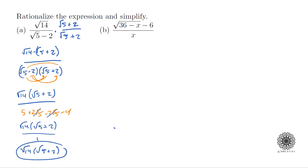For the second one we'll do a similar thing — this is a good trick to remember because it shows up in calculus a lot and many students forget it. Even though I have this ugly numerator, I'm still going to multiply by its conjugate: the square root of 36 minus x plus 6, over the square root of 36 minus x plus 6.